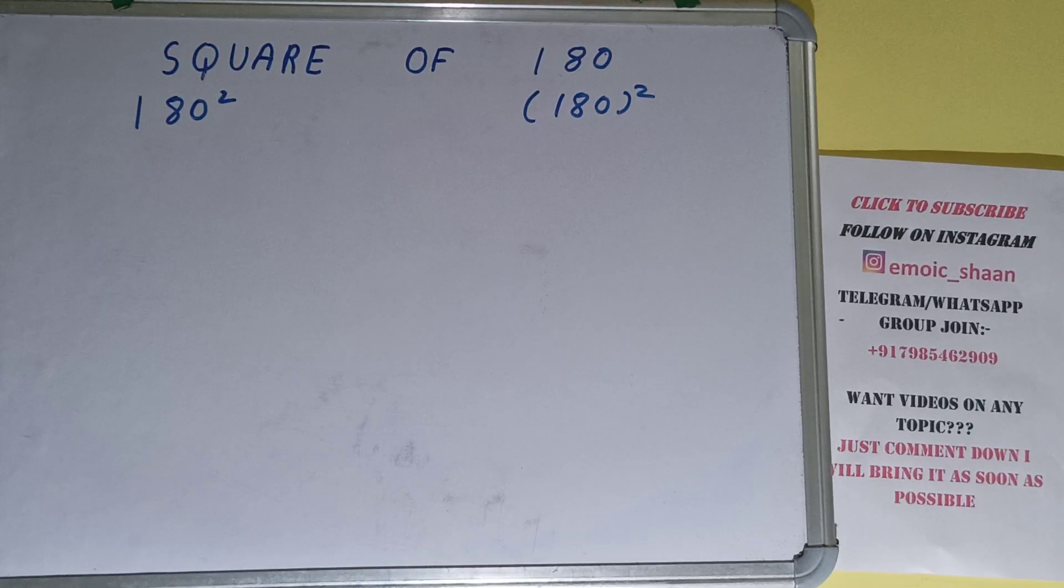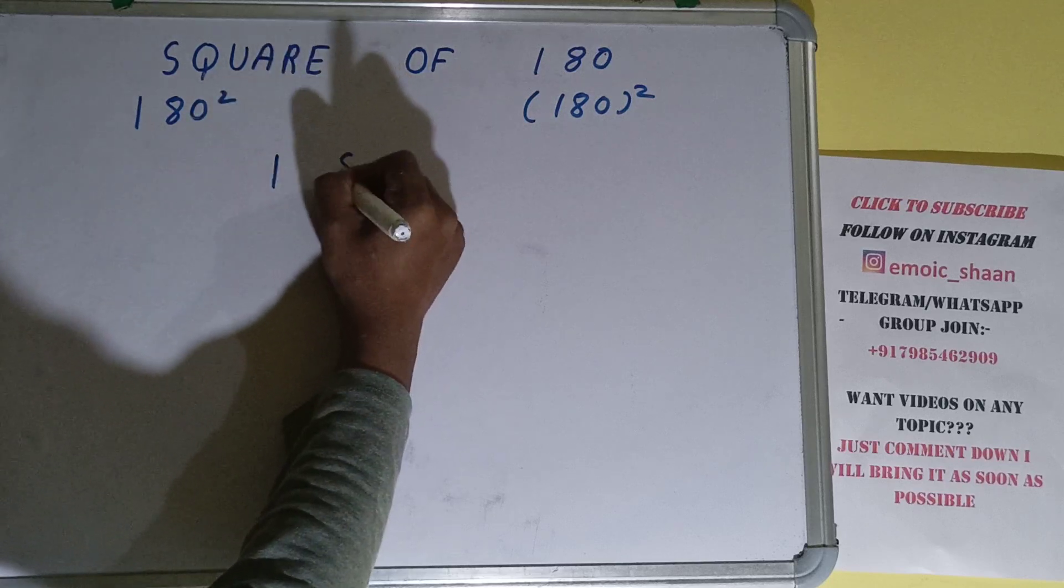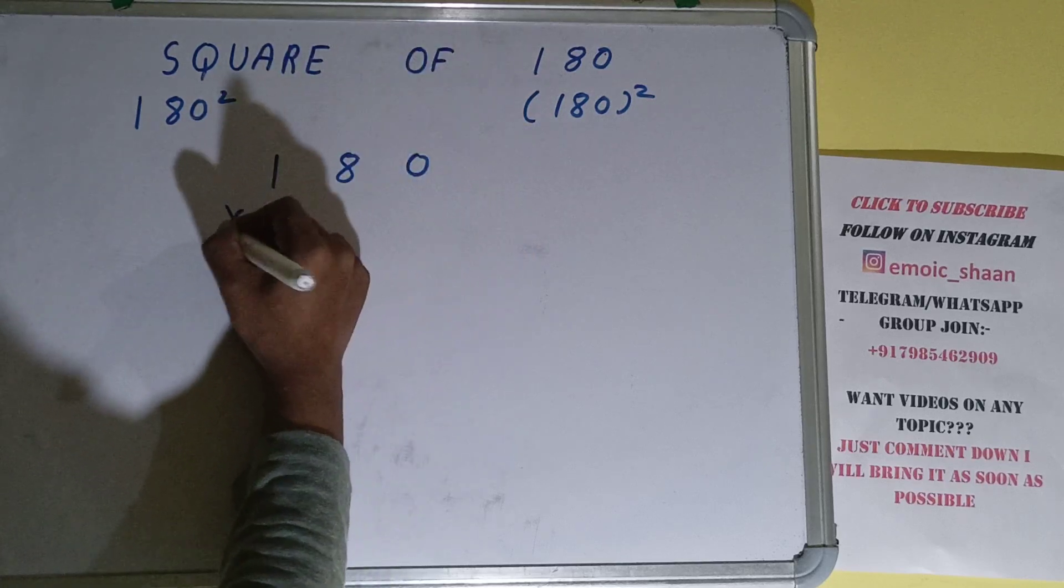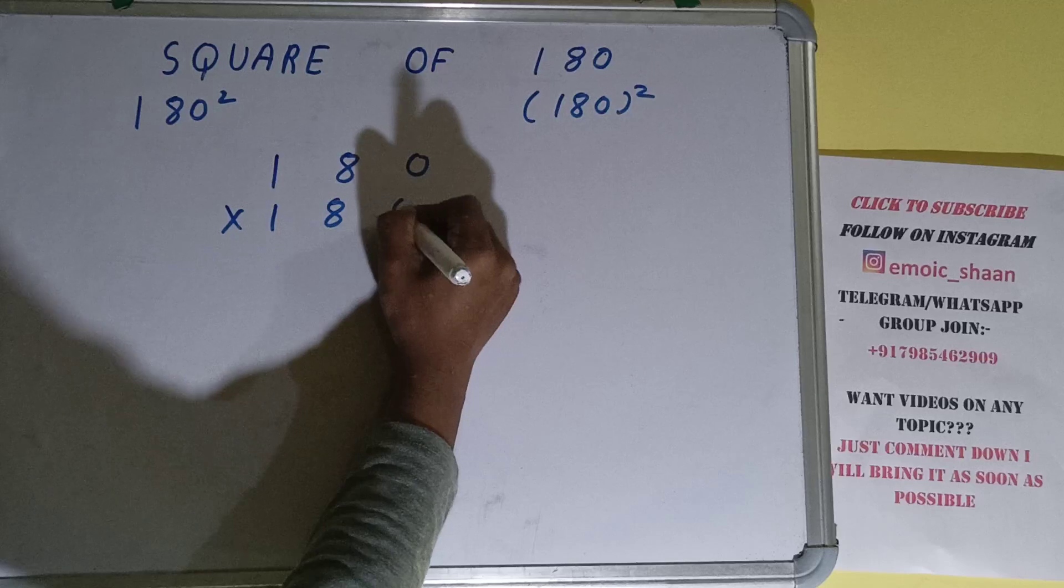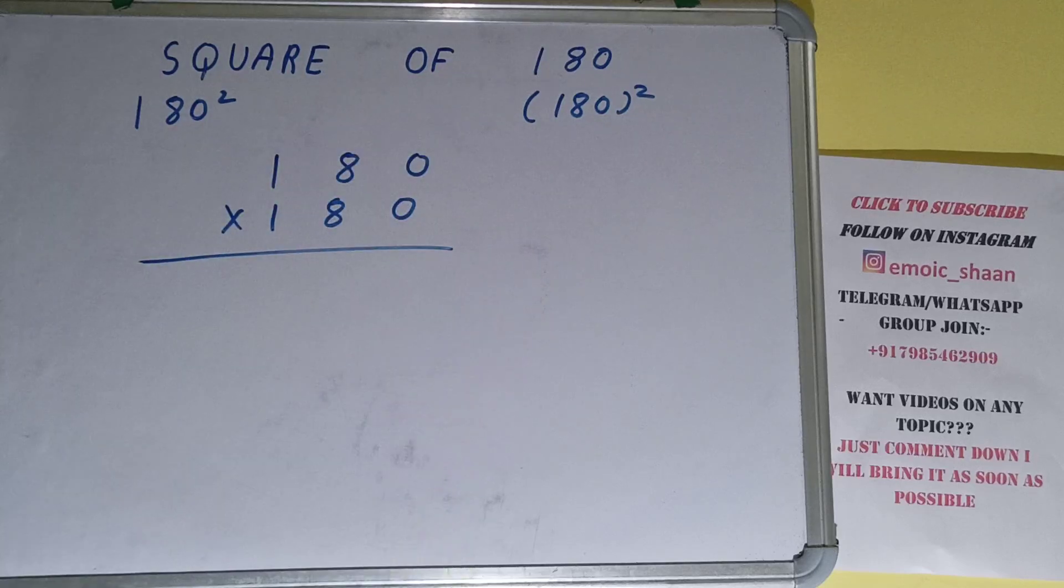That is, we need to find the square of 180. Now moving on to the solution, square basically means multiplying the number by itself. The number here is 180. To find square of it, we need to multiply it by itself, that is 180, and do the normal multiplication.